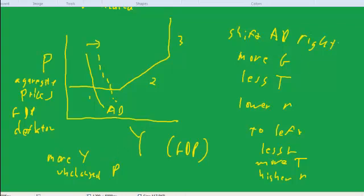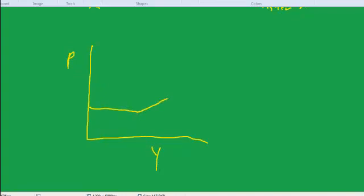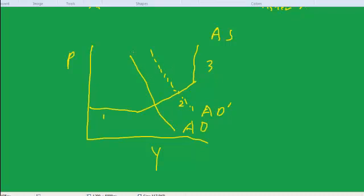Now let's see what would happen if we did the same thing in region two. So we'll go to region two. Again, we have prices, we have GDP. We have our peculiar-shaped aggregate supply curve with our three regions. And now we're going to start out with aggregate demand somewhere in the second region, in the sort of in-between economy. And we're going to shift it to the right. Call that aggregate demand prime.